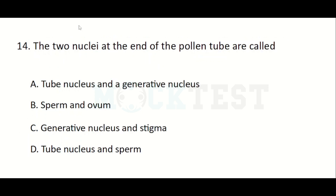The two nuclei at the end of the pollen tube are called — Option A: Tube nucleus and generative nucleus, Option B: Sperm and ovum, Option C: Generative nucleus and stigma, Option D: Tube nucleus and sperm. The answer is Tube nucleus and generative nucleus.